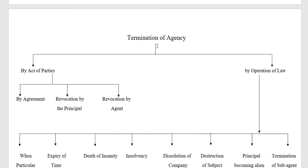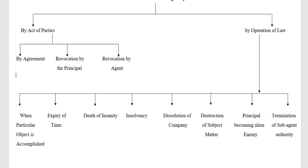Under termination by act of parties, the first method is by agreement. Law allows termination of agency when both the principal and agent agree. So by agreement between the principal and agent, the agency can be terminated.